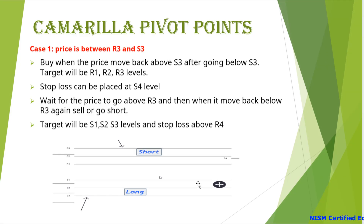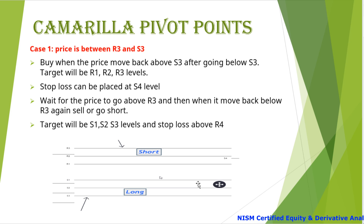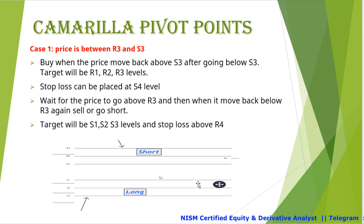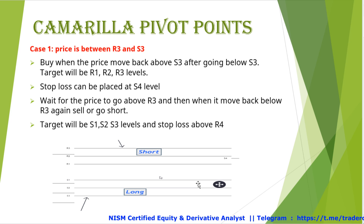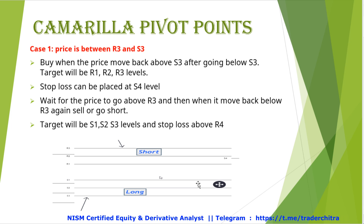We will see how to enter into the trade if the price is in between R3 and S3. R3 is the resistance and S3 is the support. If the price goes below S3 and then a green candle forms — meaning buyers entered and pushed the price back above S3 — we can enter into a long trade. The target will be R1, R2, and R3. The stop loss can be placed at the S4 level, which is the support below S3.